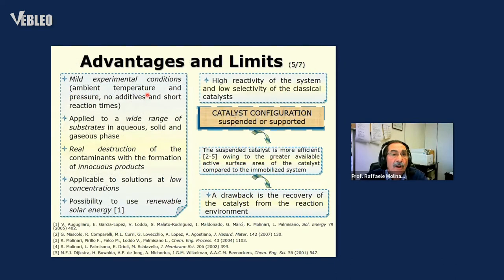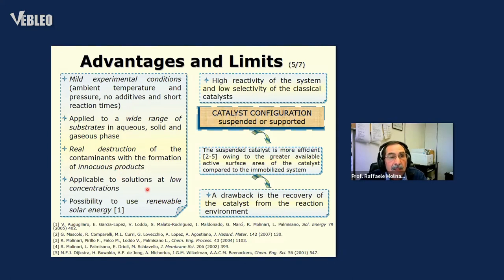The advantages of photocatalysis concern the type of conditions — ambient temperature and pressure — and they are applied to a wide range of substrates. Today we see the aqueous phase. This achieves real destruction of contaminants, meaning mineralization of organic pollutants into innocuous products. This technique can be applied to solutions containing low concentrations of pollutants, and most importantly, it uses renewable energy like solar energy.